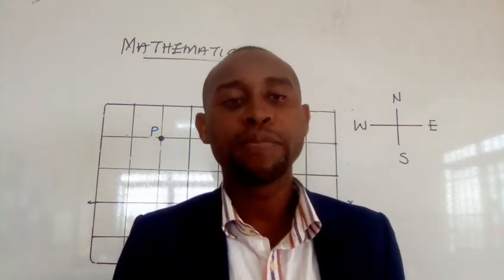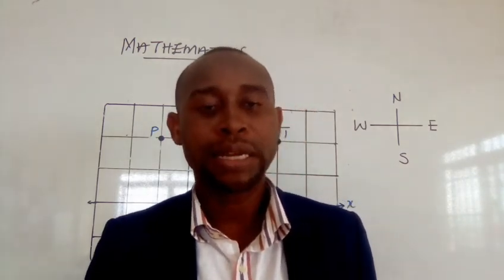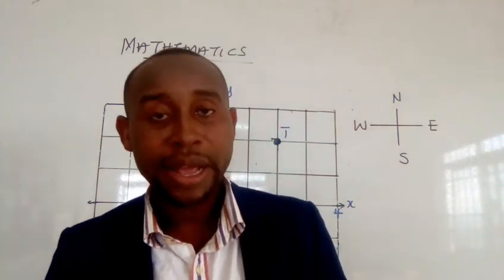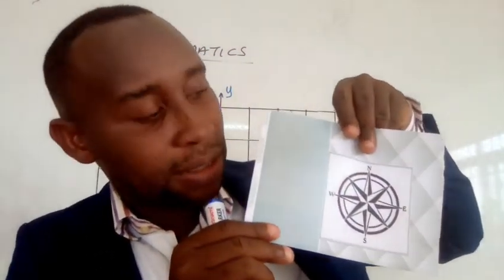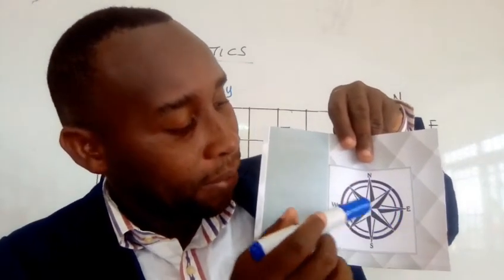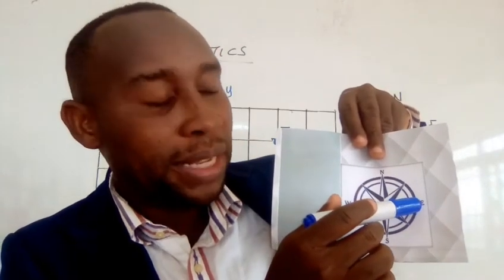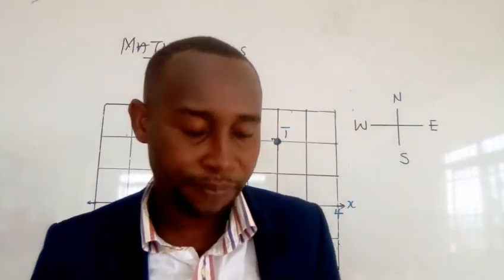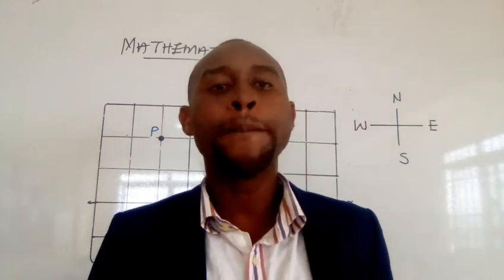A compass is an instrument used to show direction. Here is a picture of a compass. As you can see, you have North represented by N, South represented by S, East represented by E, and West represented by W.